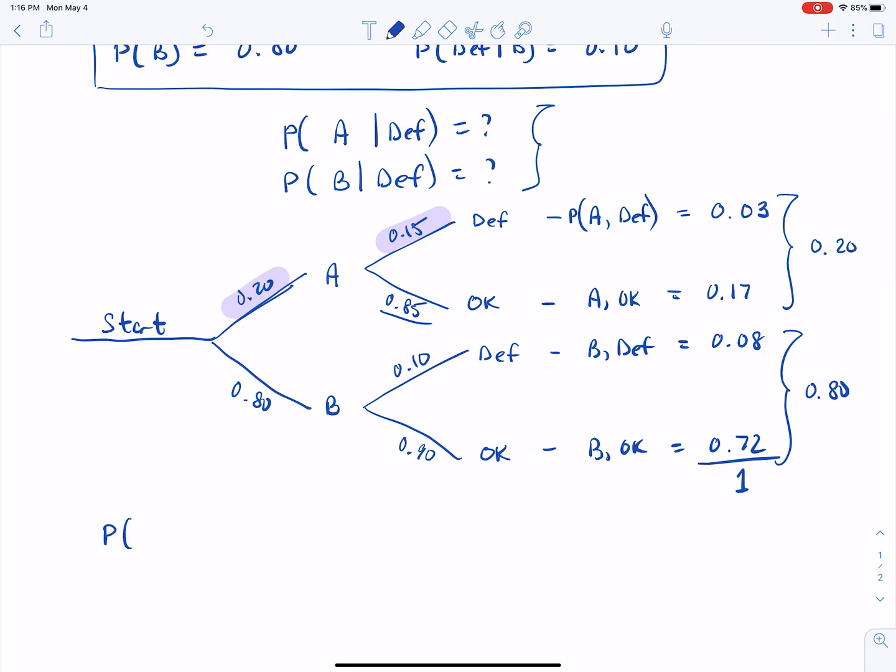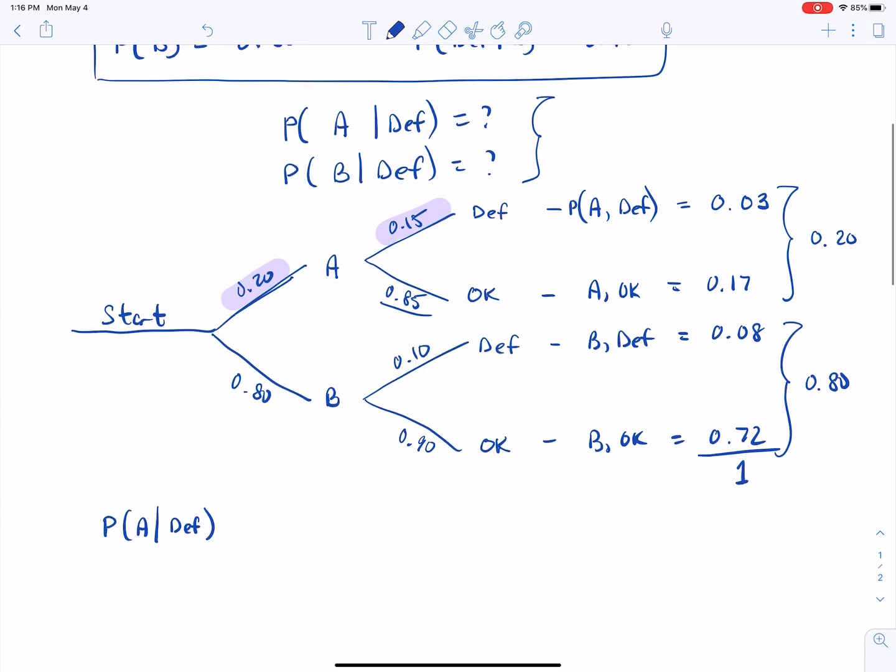Now, if I want the probability of coming from supplier A, given that I selected a defective item. So if I select a defective item, who do I look to first? Well, we know by definition of conditional probability is the probability of their overlap over the probability of defective. So when I pick a defective item that's given information, I'm only looking out of that part. Well, all of that information is now labeled in our tree diagram here. So A and defective is right here, 0.03. Now, what's the probability of being defective? Well, I know that defective happened here and defective happened here. So if I add those together, that gives me the overall probability of a defective item being selected. And if we simplify that, we get 3 over 11.